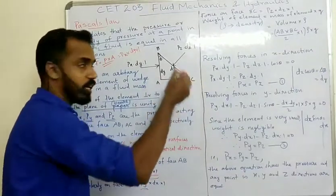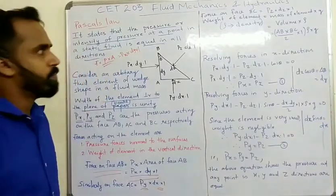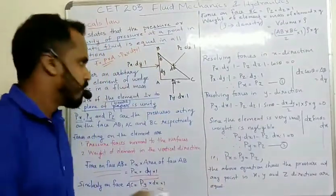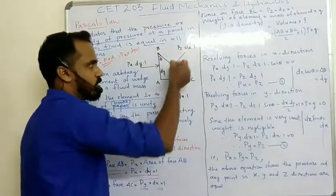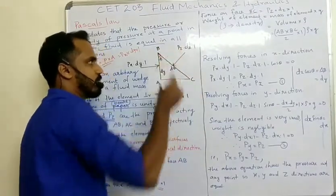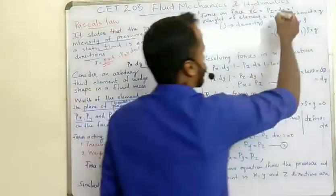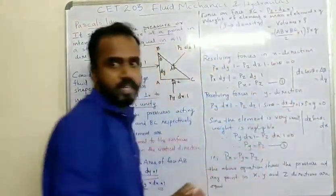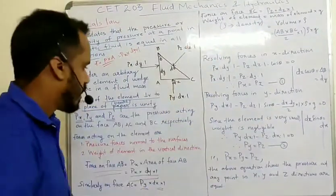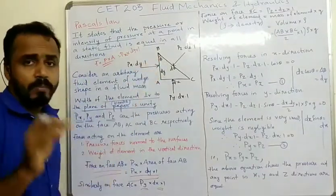The length is dx, so the force on face AB is px into dx into 1. The force on face BC: pressure force equals pz, with length dz and width 1. So the pressure force on face BC is pz into dz into 1.